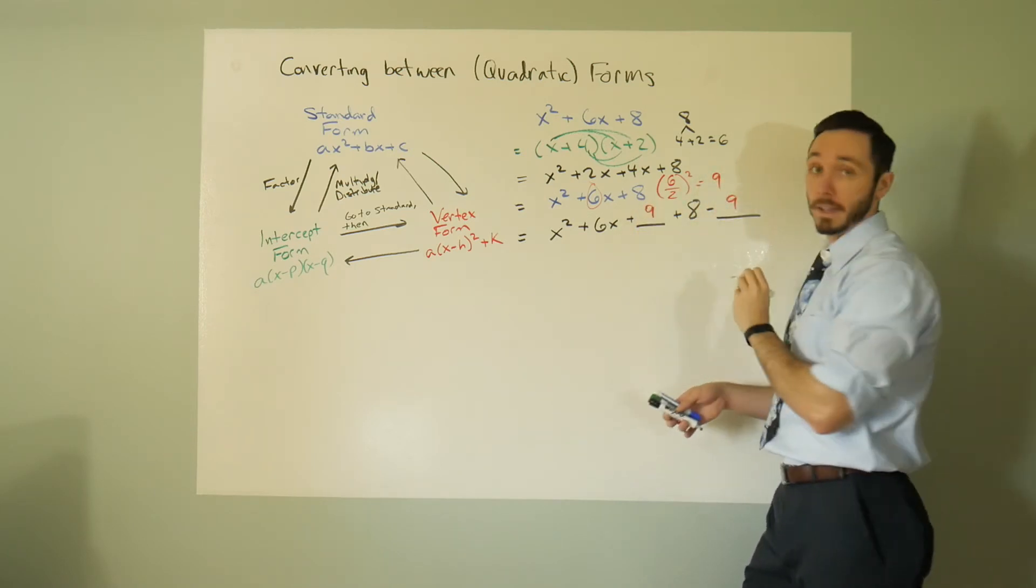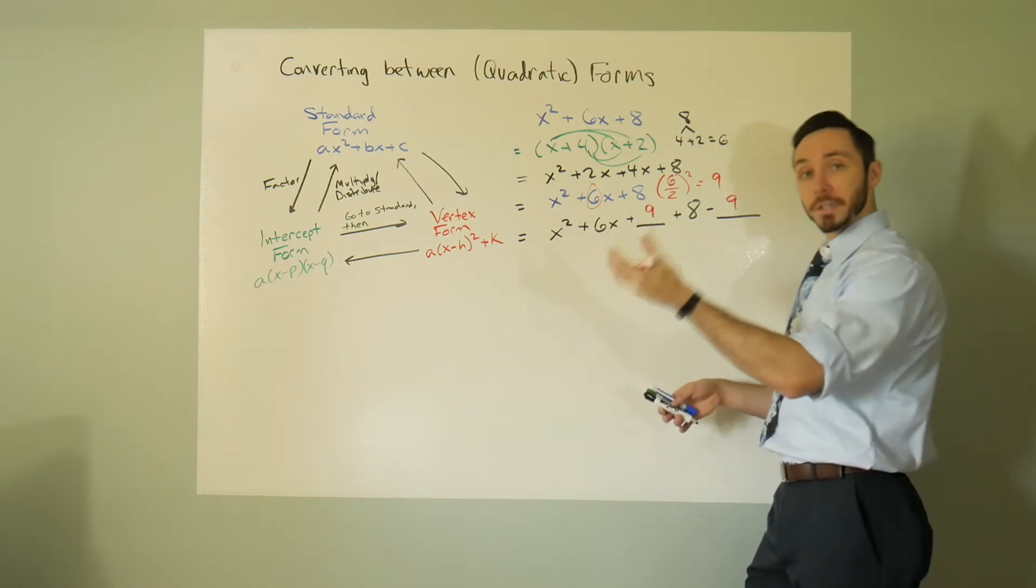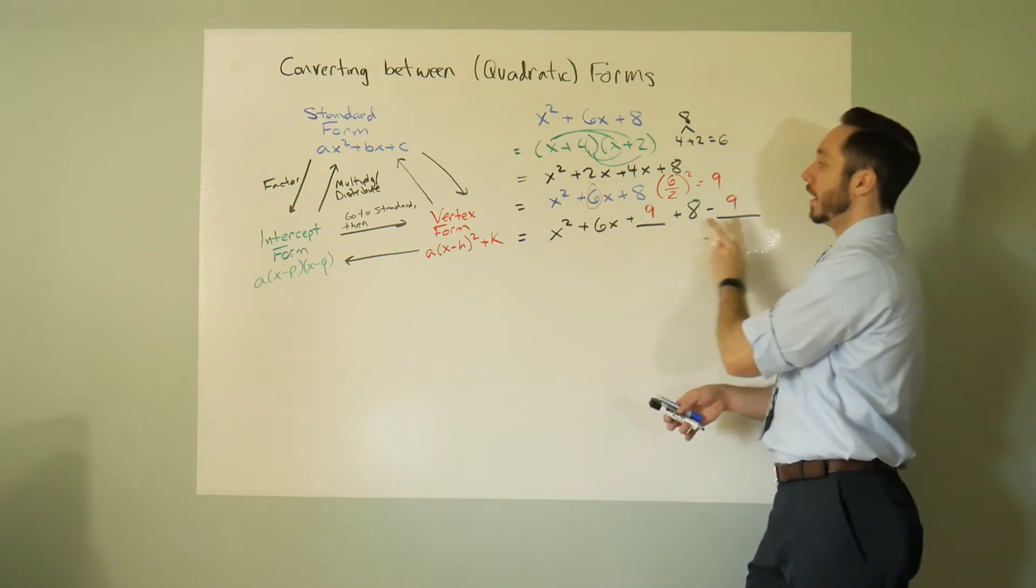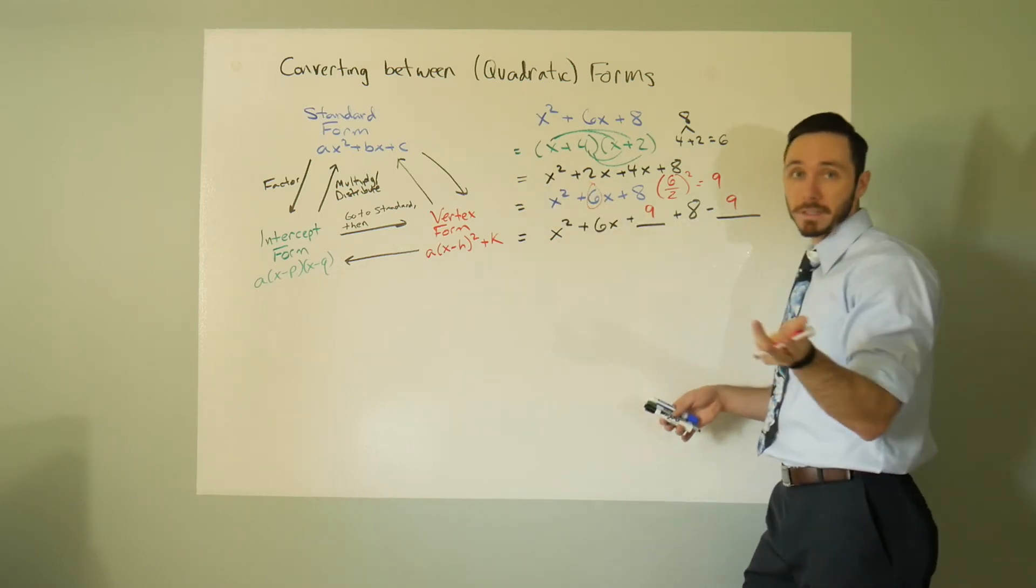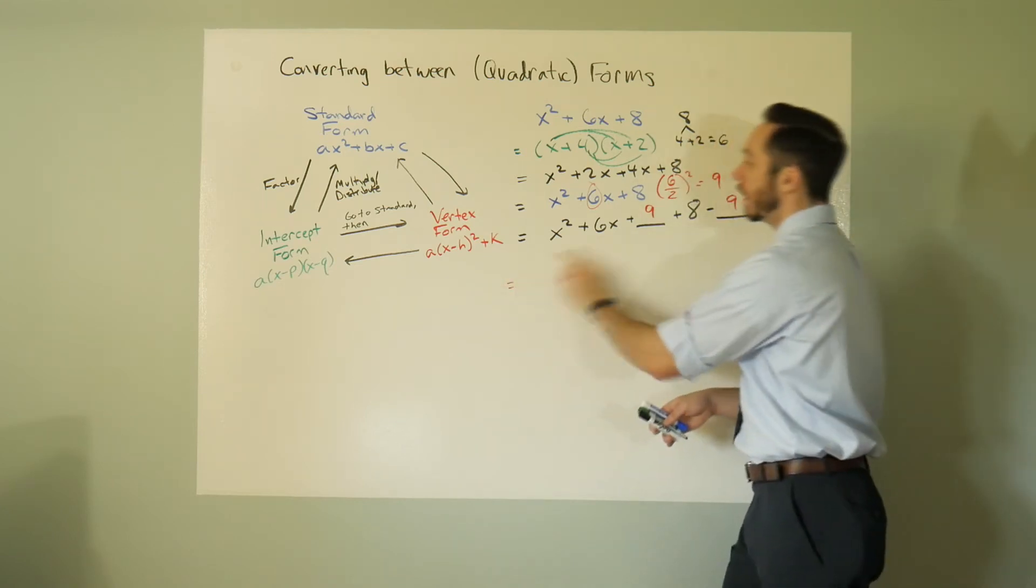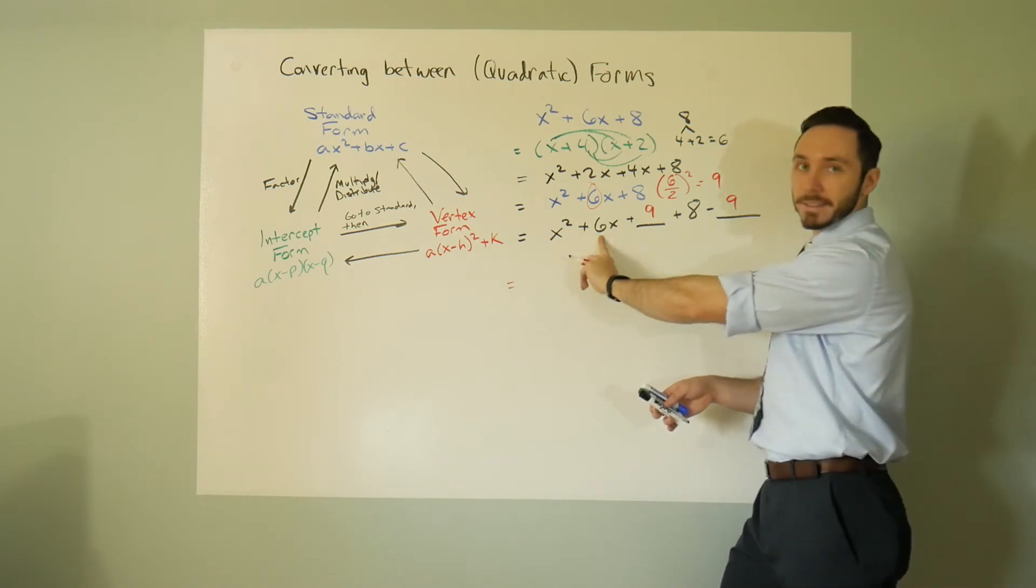So we're going to add a 9 and then subtract a 9, because you can't just blindly add a number. You have to make sure it's a balanced expression if we're going to have equal signs in between them. So I'm not changing the expression, right? 9 minus 9 is 0, so I'm effectively changing nothing.